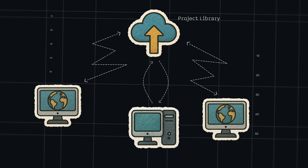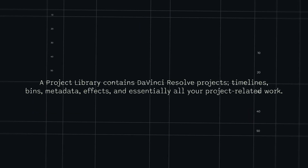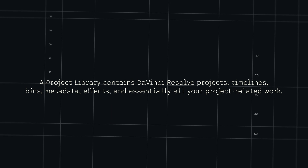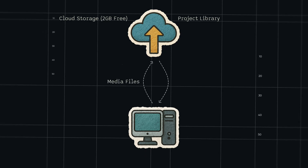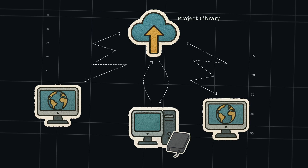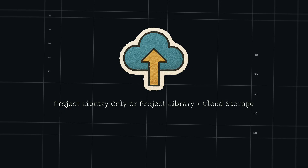Once you've created a project in the cloud, you or someone else can open that project anywhere in the world on any computer. But remember that when you create a project library in the cloud, it will only store project files — everything you did in DaVinci Resolve: the project information, color grades, cuts, everything on your timeline. All your editing basically, but not the media files. You can upload media files straight to Blackmagic Cloud, or you can use an external hard drive and take it physically from one computer to another.